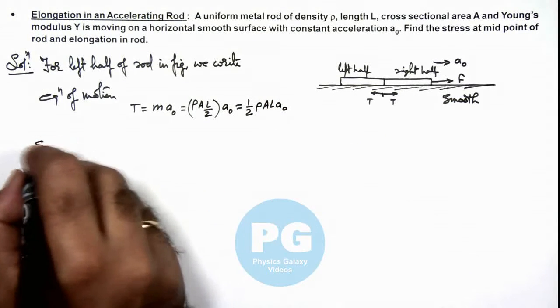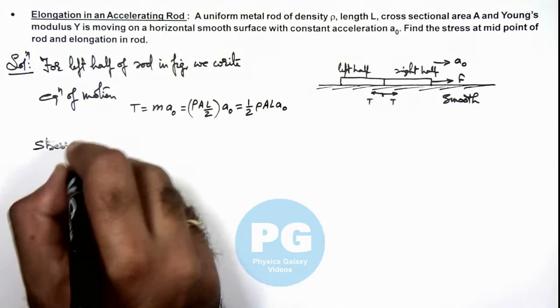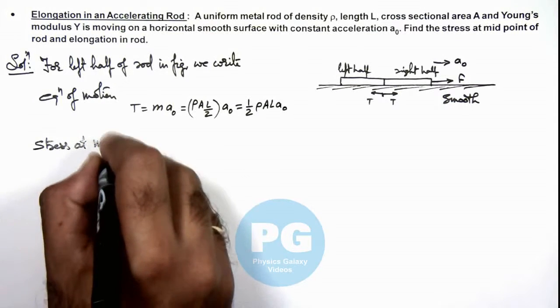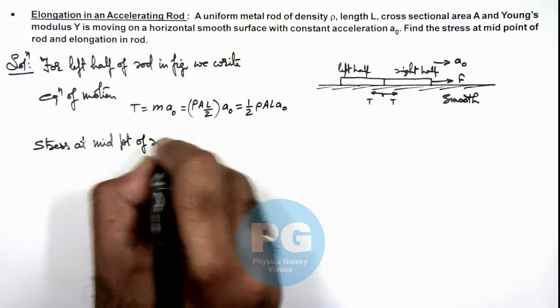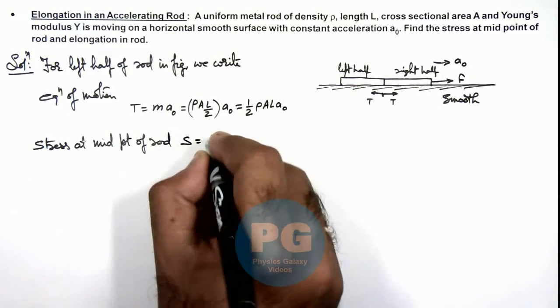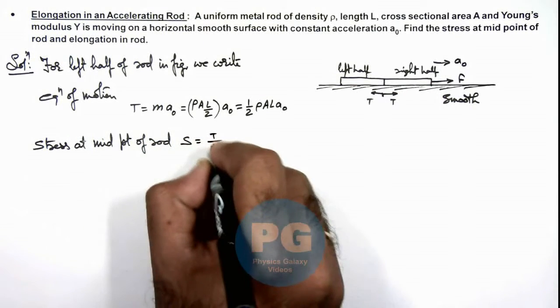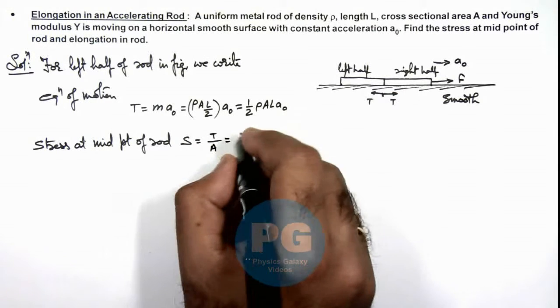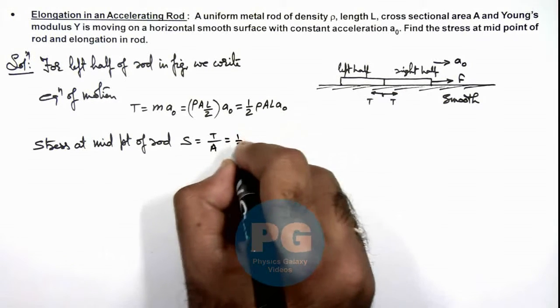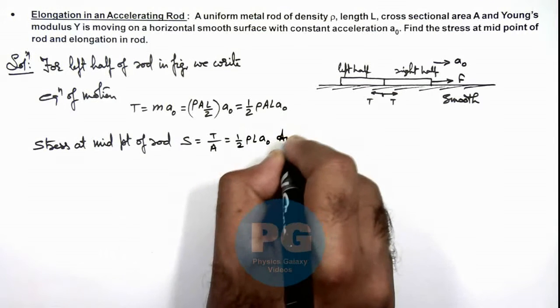If we calculate the stress at mid point of rod, then this stress we can write as tension divided by the cross sectional area, which will give us ½ρLa₀. This is one result of the problem.